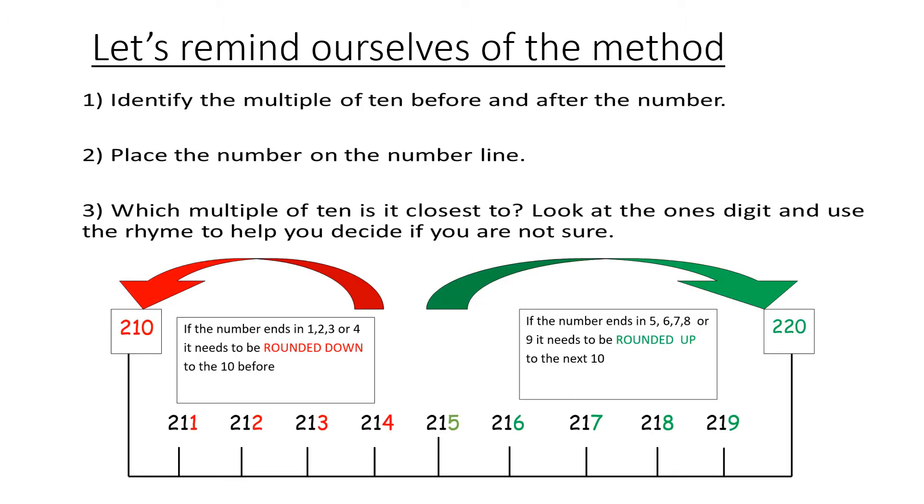Let's recap on the method we used yesterday. Step 1: Identify the multiple of 10 before and after the number. Step 2: Place the number on the number line. Step 3: Which multiple of 10 is it closest to? Look at the ones digit and use the rhyme to help you decide if you are not sure.